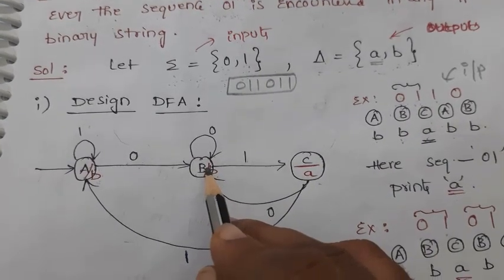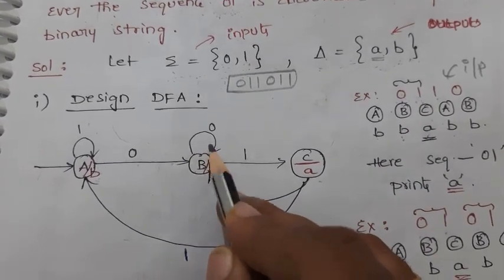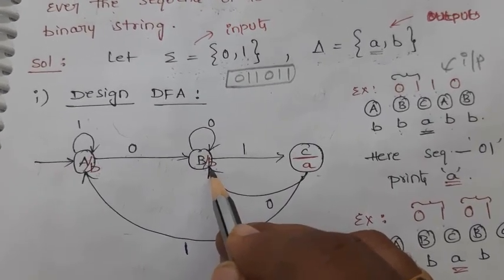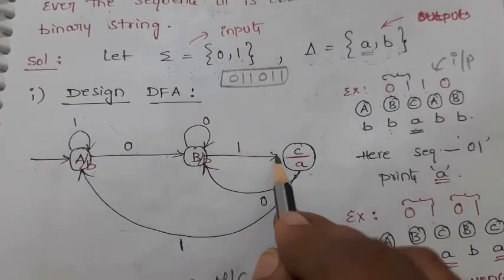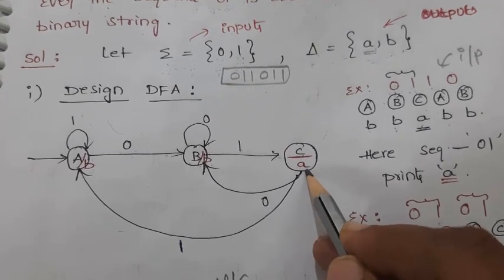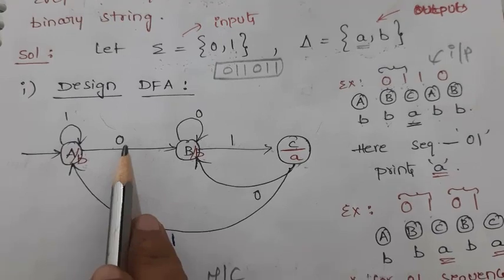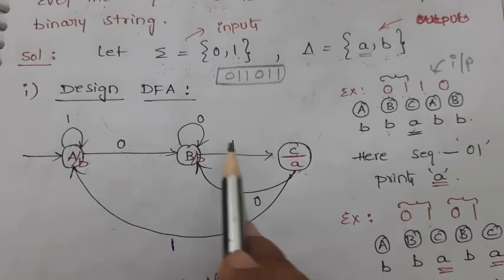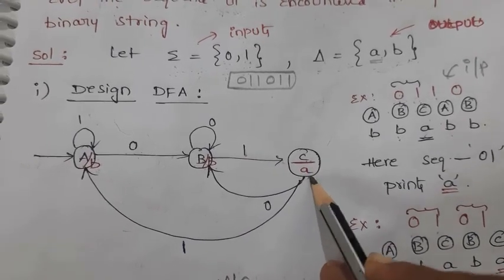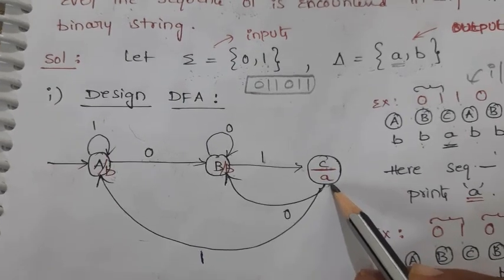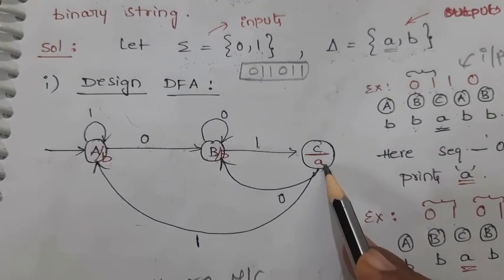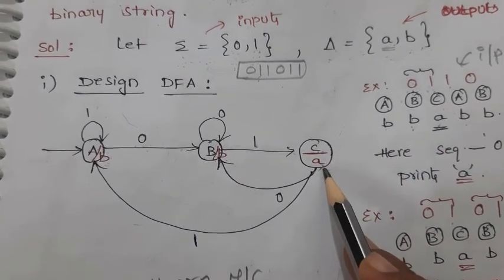For state B, there are two cases of input: 0 or 1. If 0 is the input, it stays at state B with output B. If 1 is the input, it moves to state C with output A. So if we have the sequence 0,1, we end up at state C with output A — that is exactly our objective.